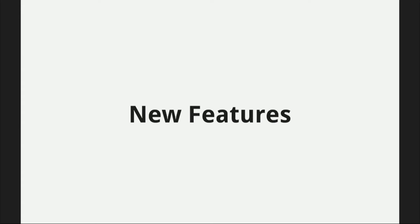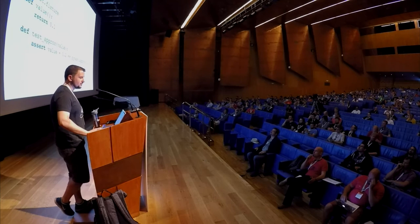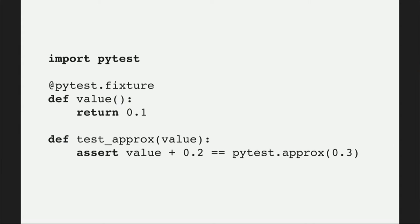I wanted to talk about new features. One of which is approx. A lot of people from the scientific community find it hard to compare floating point numbers. So there's a new method called pytest.approx, and what it does is assert, based on a precision, that your values still match — which is quite handy.